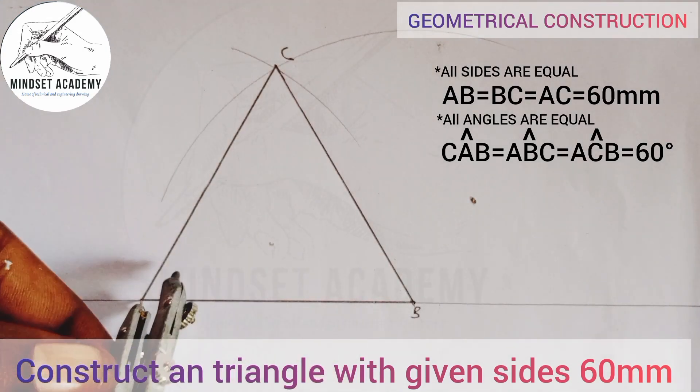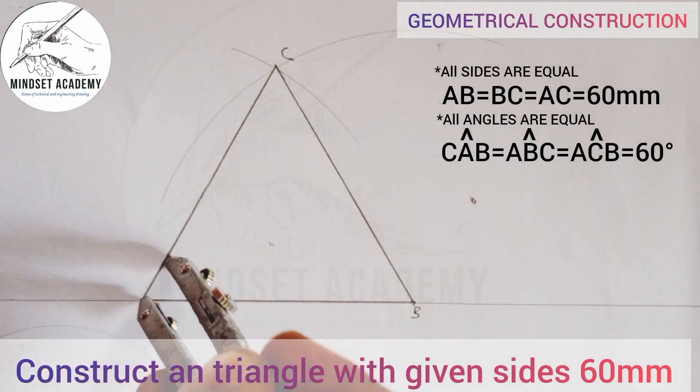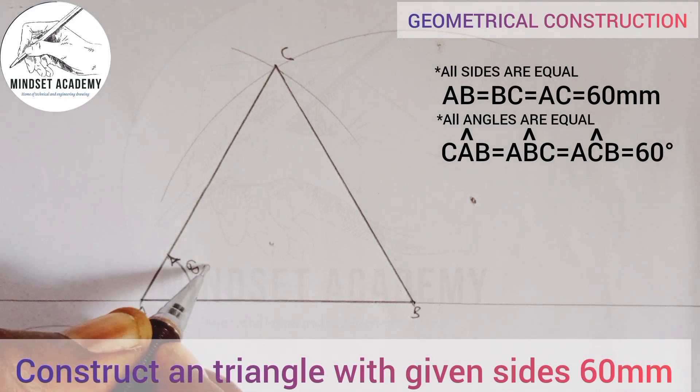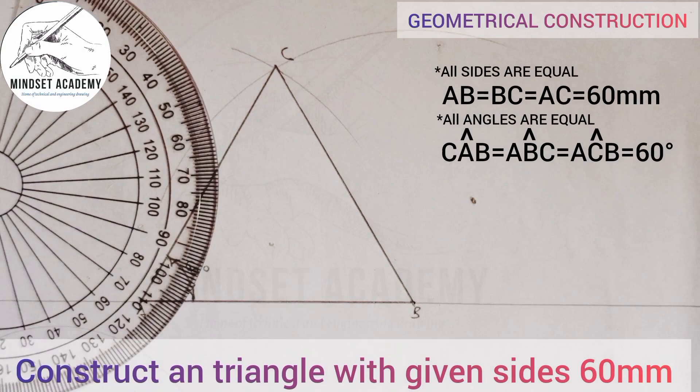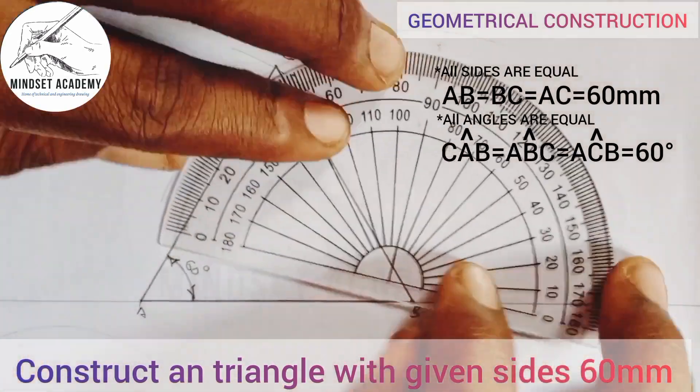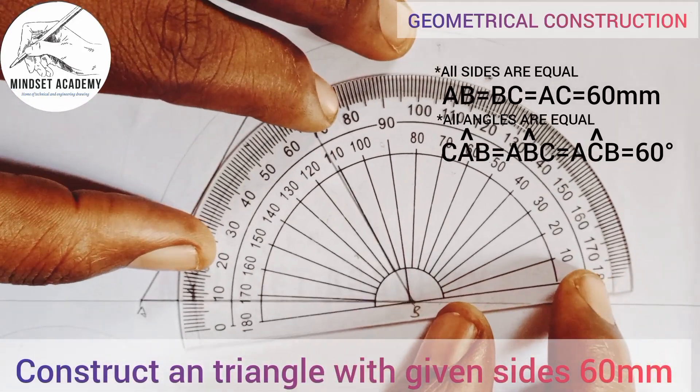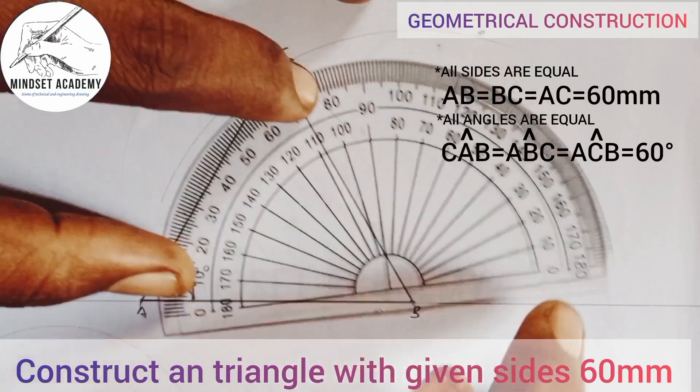60 degrees. Similarly the angle from here, the angle from this point, we are coming also and I place it this way, take my point here to this point B.